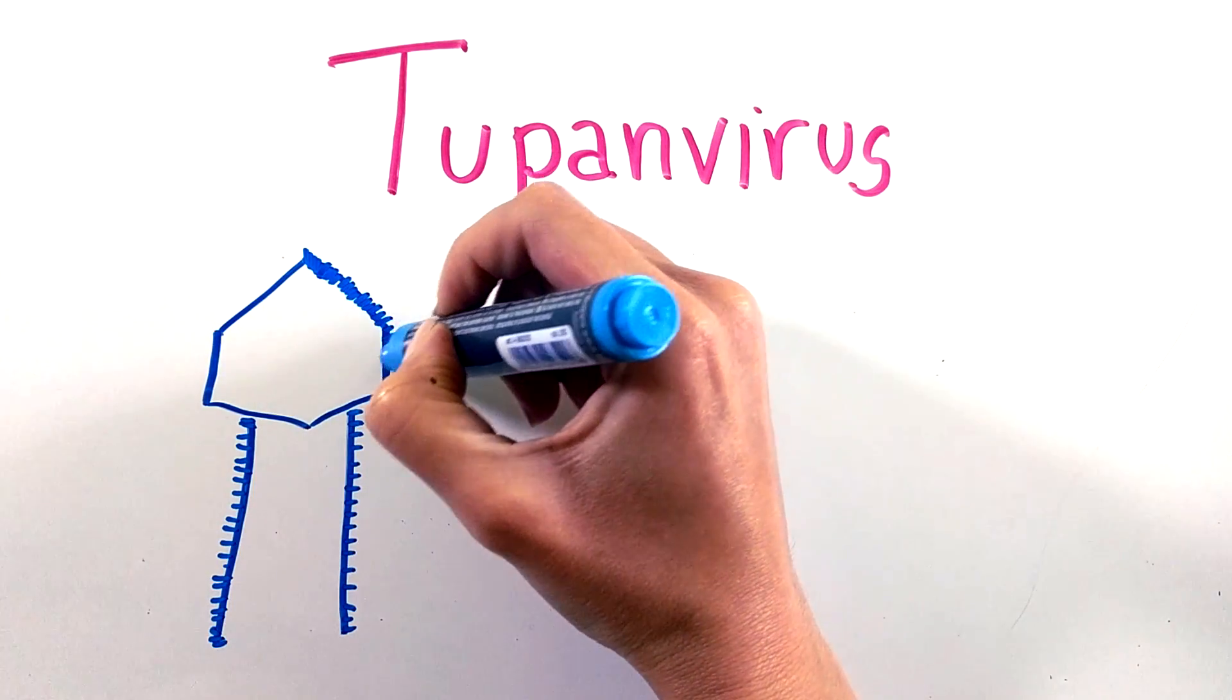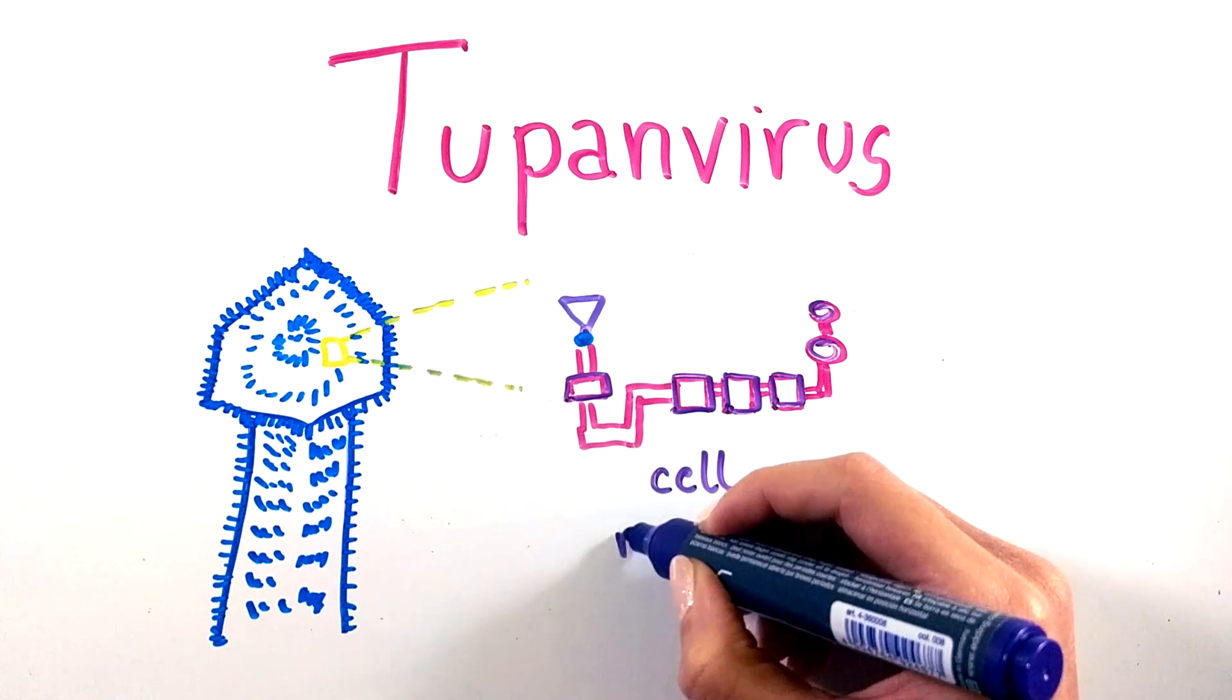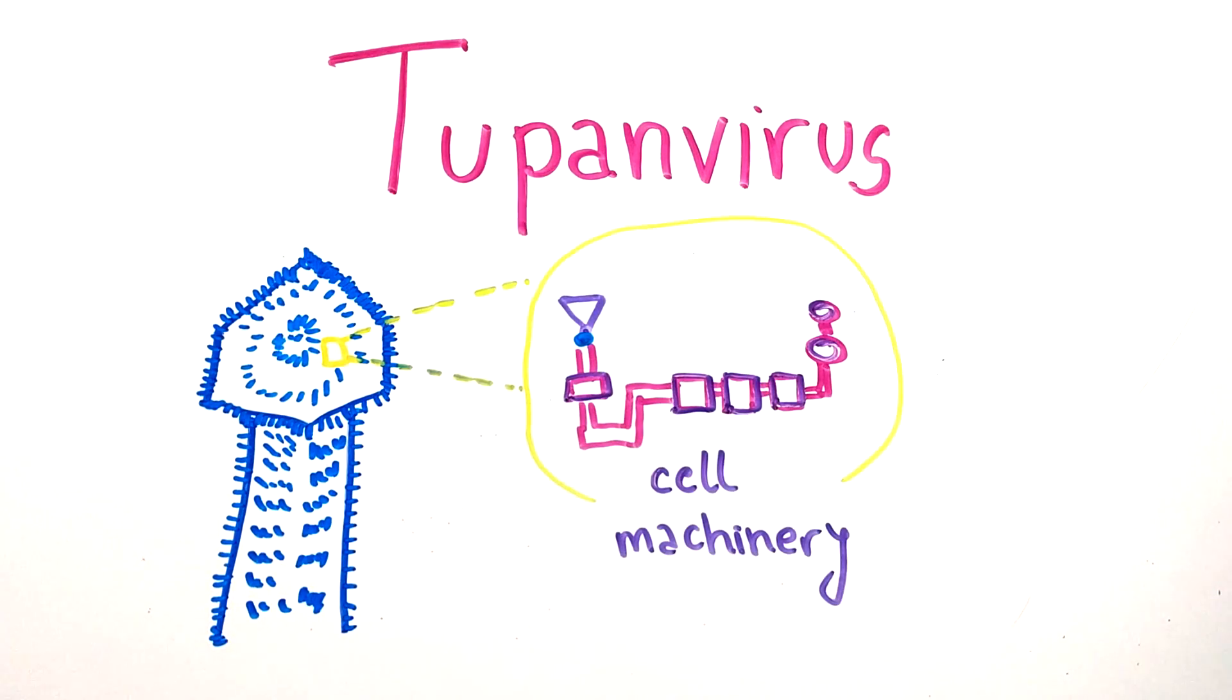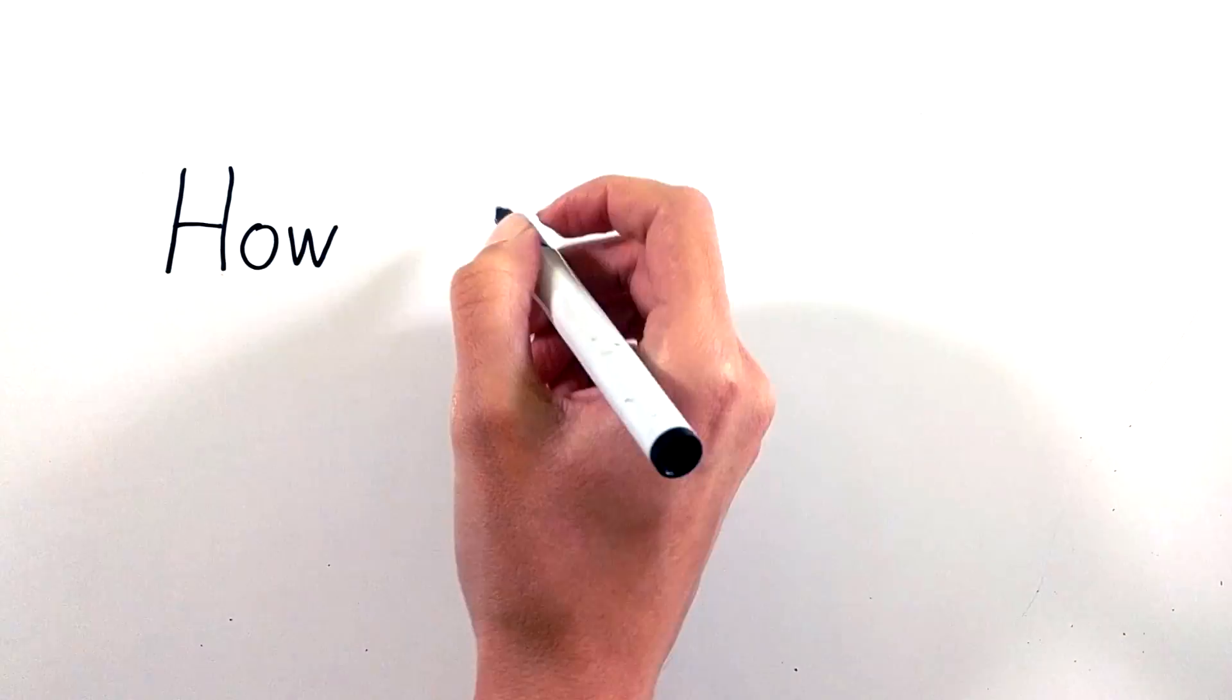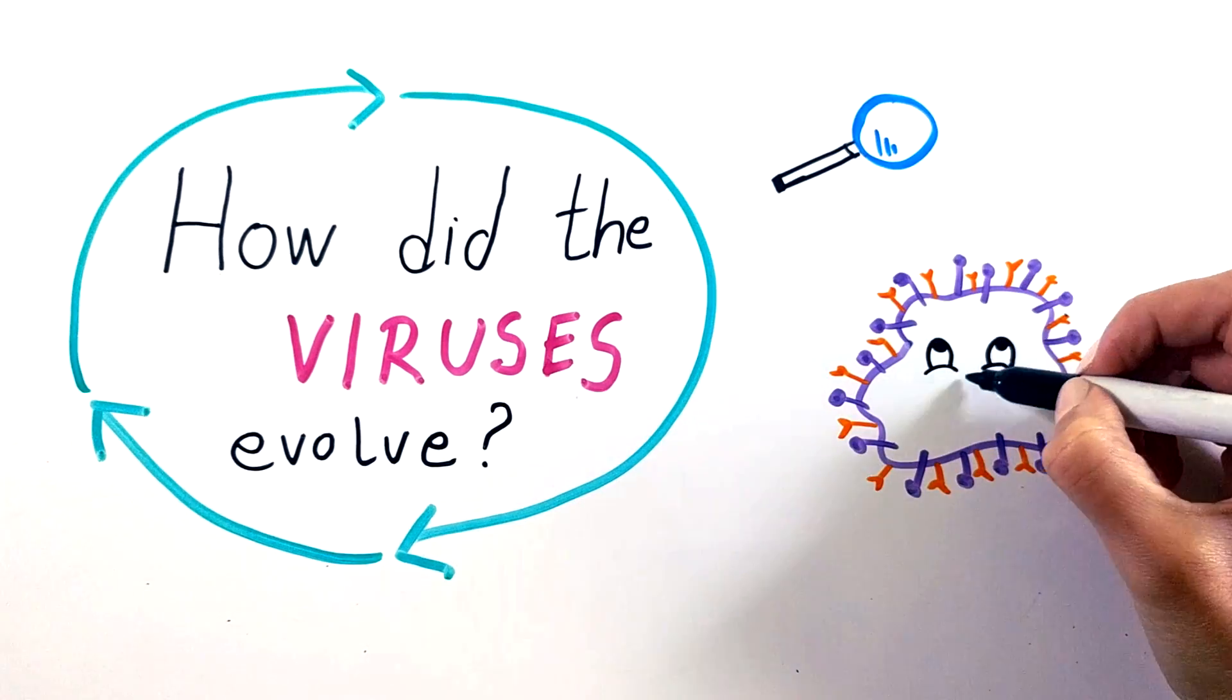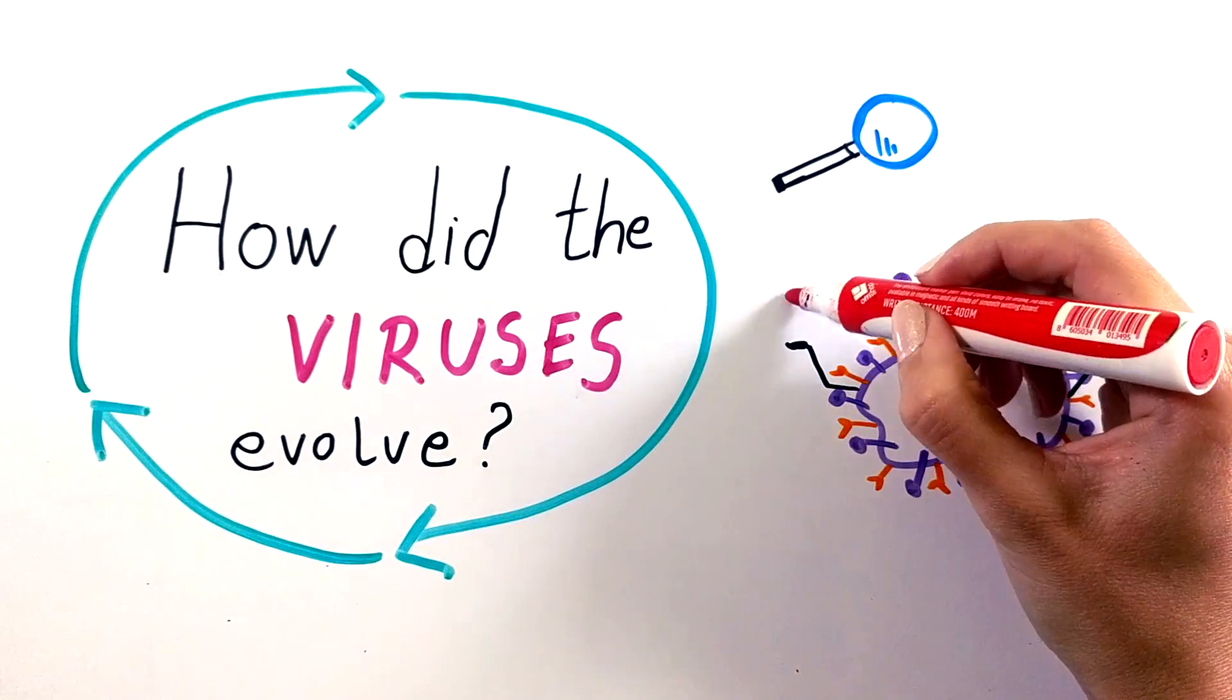Recent studies revealed the surprising presence of a giant virus called Tupanvirus, which has a more complete set of cell machinery. This discovery alone has shaken up the virus evolution debate, but it may help in the illumination of their origins. How exactly viruses evolved remains unclear, however further studies will reveal the right answer. Till then, there are only theories.